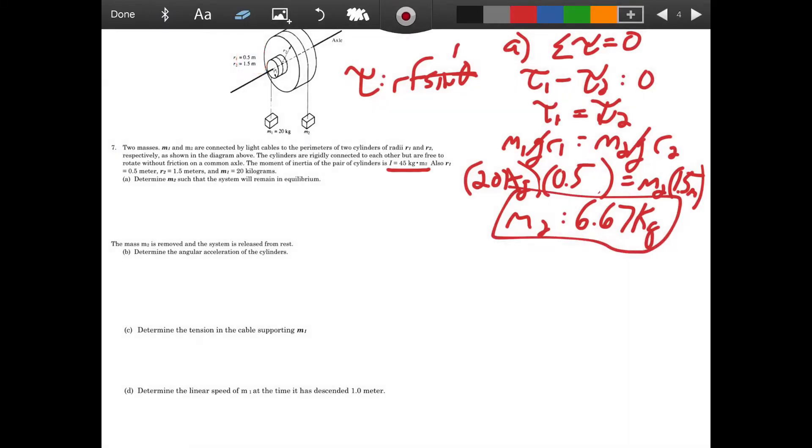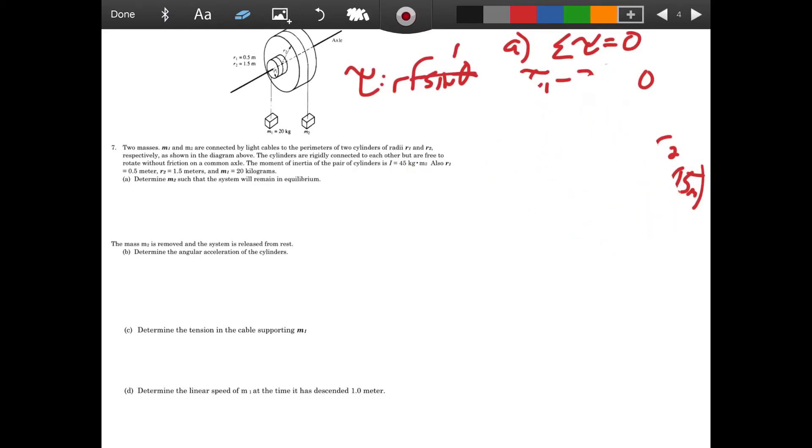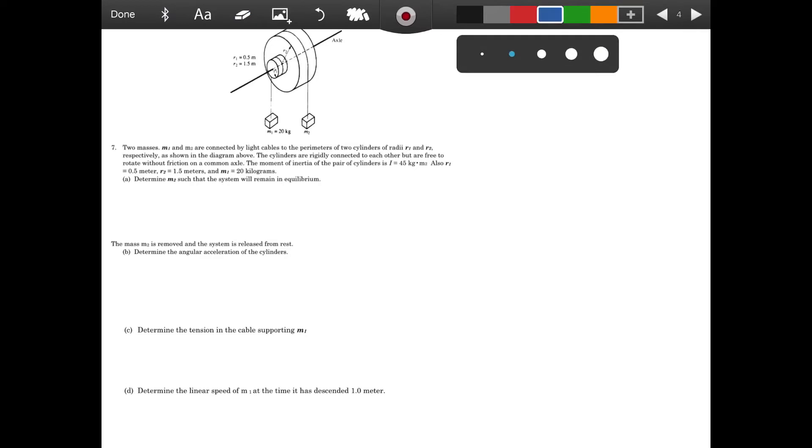So for part B, we have the mass M2 is removed and the system is released from rest. Now this object is not in free fall because the tension or the rope is still connected to the pulley. So there is going to be some resistance. If I look at part C, this is looking for the tension here, I'm looking for angular acceleration. I'm really not sure which one I'm going to find first. But they are going to both work together.